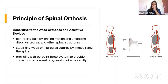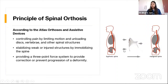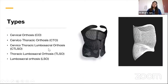The third and most important principle is the three-point pressure system, also called the 3-4 system, to provide correction or prevent progression of deformity. One force acts from one direction, opposed by two counter forces to derive the correction at the spine. The types of spinal orthosis are: cervical orthosis, cervicothoracic orthosis, cervical thoracic lumbosacral orthosis, thoracic lumbosacral orthosis, and lumbosacral orthosis.